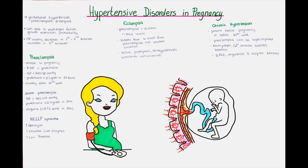To recap the hallmarks of pre-eclampsia, let's go through the defining criteria again. There are two really important things to remember. First, the patient develops hypertension — so blood pressure of at least 140/90 mmHg — newly after week 20 of the pregnancy, having had a normal blood pressure before. And second, the new onset of proteinuria after the 20th week of pregnancy with a level of at least 0.3 gram or 300 milligram in 24 hours.